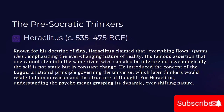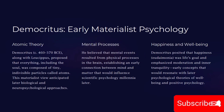Democritus (c. 460–370 BCE), along with Leucippus, proposed the atomic theory of matter, arguing that everything, including the soul, was composed of tiny indivisible particles called atoms. He believed that mental events were the result of physical processes in the brain, proposing a kind of materialist psychology that anticipated later biological and neuropsychological approaches. He also posited that happiness — eudaimonia — was the goal of life, emphasizing moderation and inner tranquility.